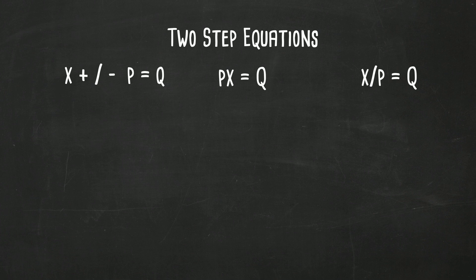Let's look at this first example: x plus 3 equals 9. We want to get the x by itself. So what we can do is undo the positive 3 by subtracting negative 3. And what we do to one side, we need to do to the other. So on the left side, the 3's cancel, and then 9 minus 3 equals 6. So x equals 6.